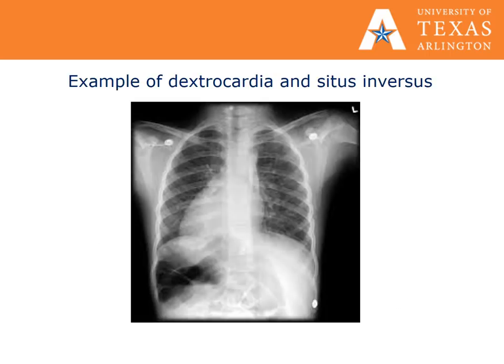This is an example of dextrocardia. The heart is reversed and is positioned on the right side of the chest. This particular patient also has situs inversus of the abdomen because their stomach bubble is on the right side and the liver is on the left.